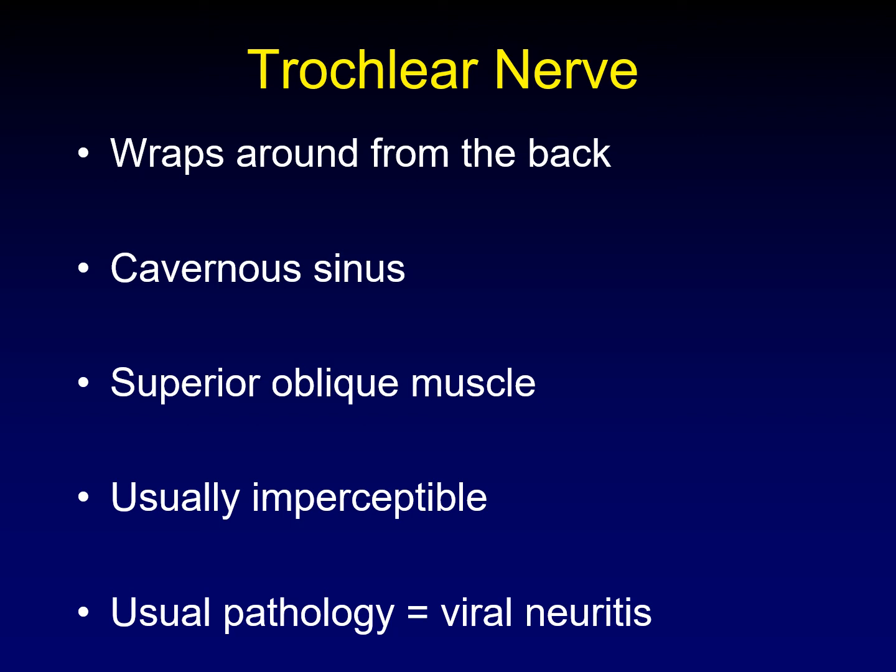Number four: the trochlear nerve. The trochlear nerve has a very long, tortuous course. It is the only cranial nerve that arises from the dorsal aspect of the brain stem. It wraps around from the back of the brain stem forward and runs through its own little dural sheath along the edge of the tentorium. From there, it goes into the cavernous sinus, and once it enters the orbit, it innervates the superior oblique muscle — that's all it does.